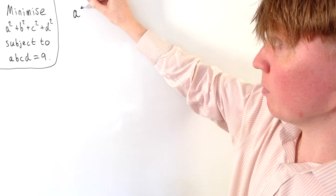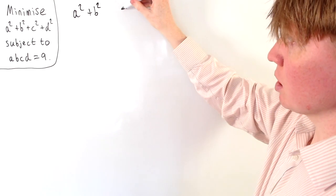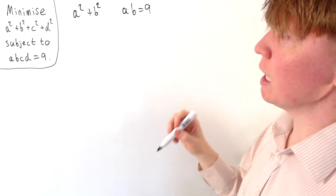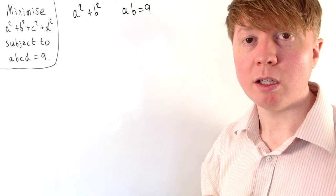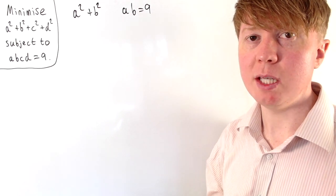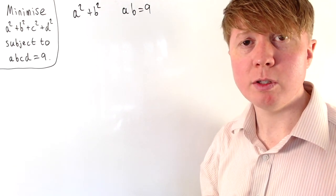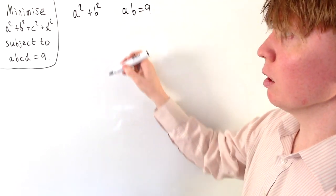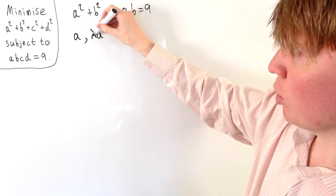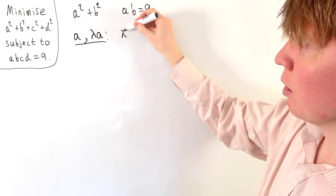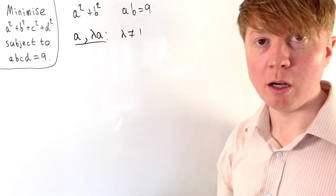Let's imagine we were trying to minimise just a squared plus b squared, where the product of a and b has to be constant — say, ab = 9. By exploring this two-variable case, we find the smallest possible value occurs when a is equal to b. To prove this, we start with values of a and b that aren't equal, writing b as lambda times a, where lambda isn't equal to 1.